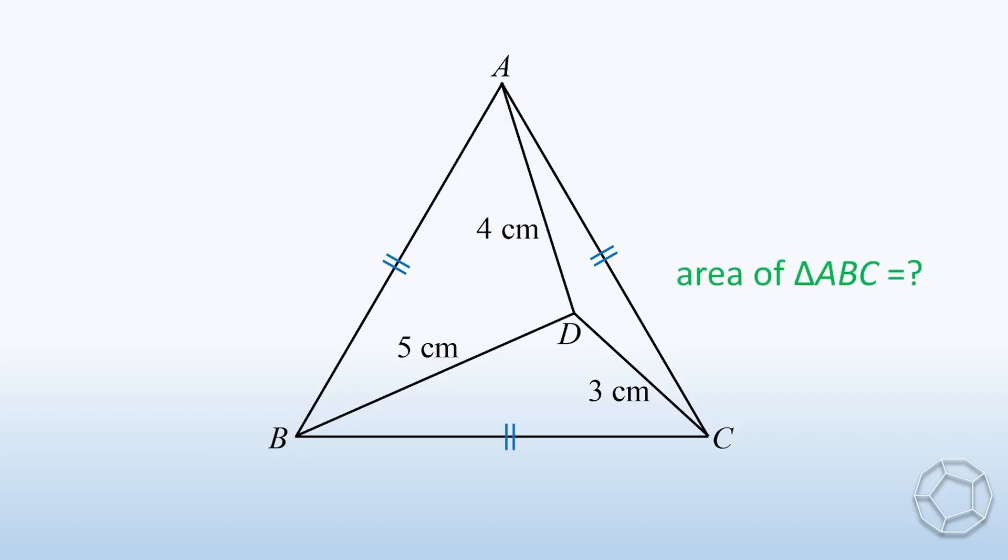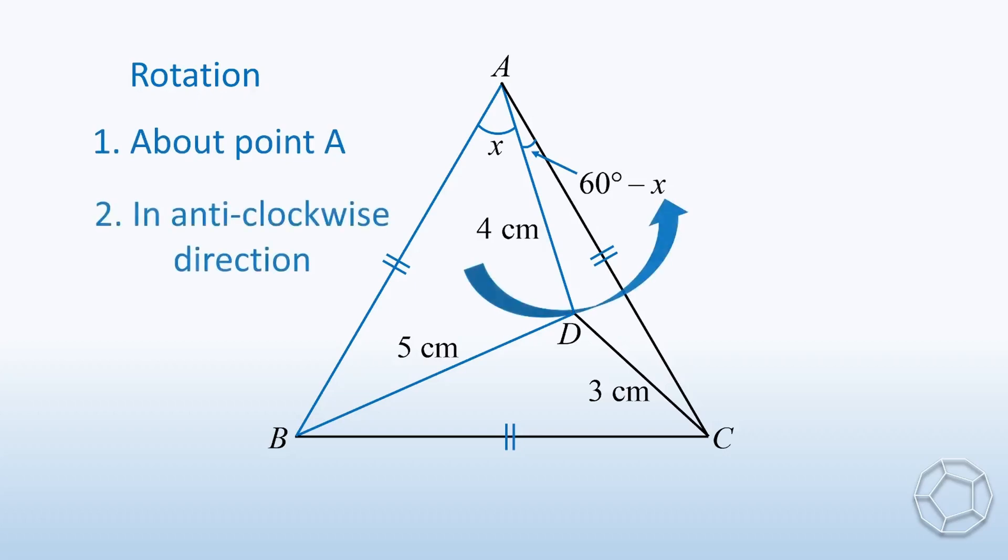First of all, we focus on the blue triangle. Let this angle be x. So the angle next to it is equal to 60 degrees minus x. Now, we're going to rotate the blue triangle about point A in anti-clockwise direction by 60 degrees.